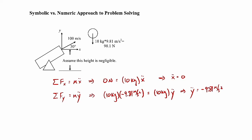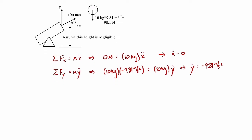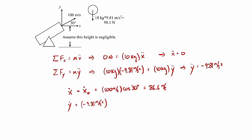To find velocity as a function of time, we integrate both equations. Integrating the x equation and applying initial conditions, ẋ = ẋ₀, which is 100 m/s × cos(30°) = 86.6 m/s. For the y direction, integrating gives ẏ = −9.81 m/s² × t + ẏ₀, where ẏ₀ is the initial y velocity.